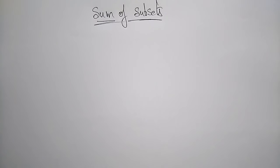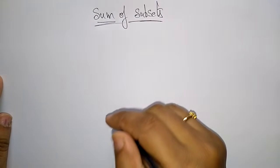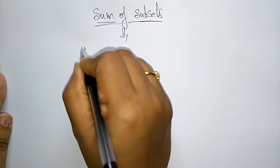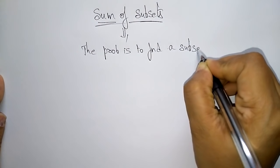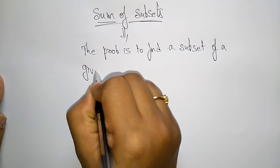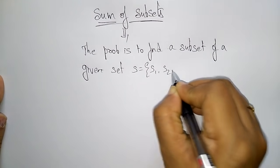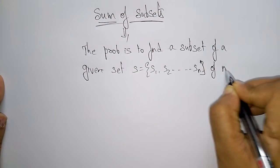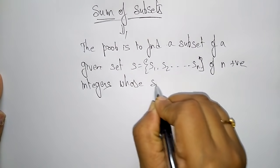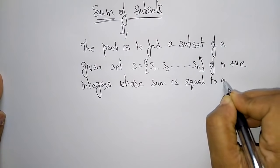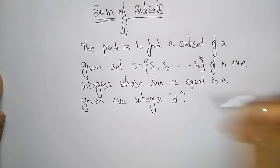Coming to the next application in backtracking: the Sum of Subsets problem. In the previous video I explained the N-Queens problem. Now let us see the Sum of Subsets. The problem is to find a subset of a given set S = {s1, s2, ..., sn} of n positive integers whose sum is equal to a given positive integer d.